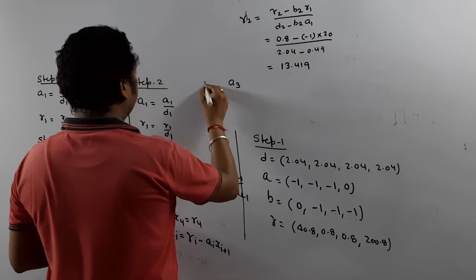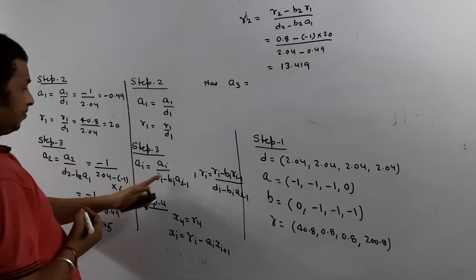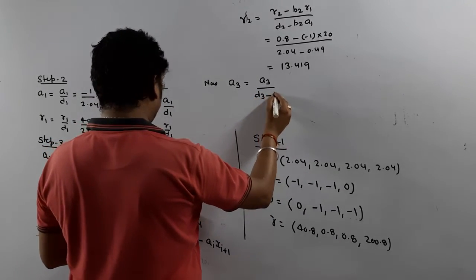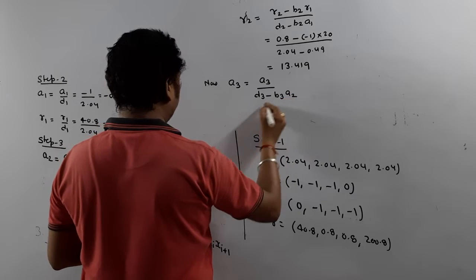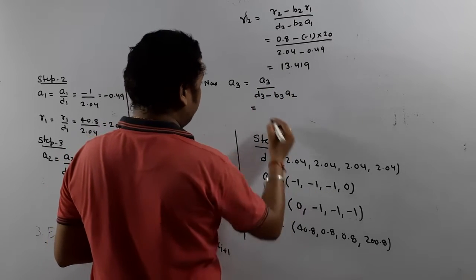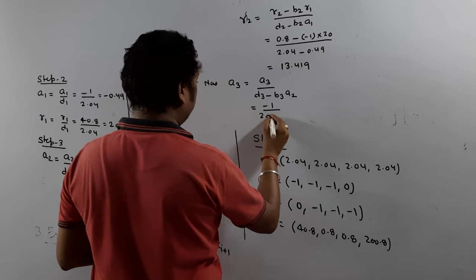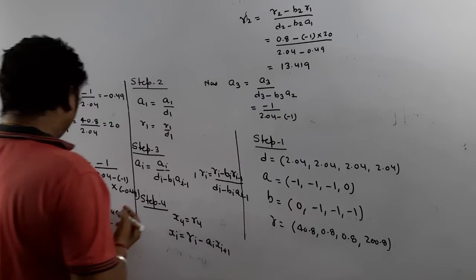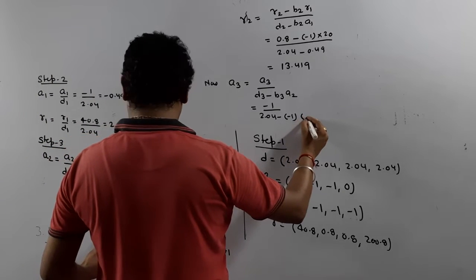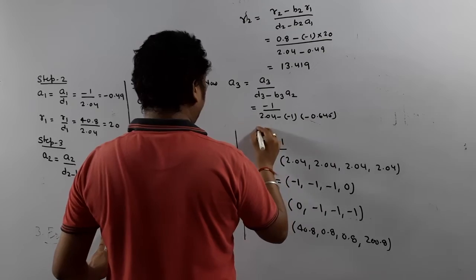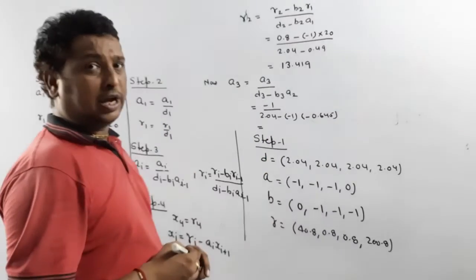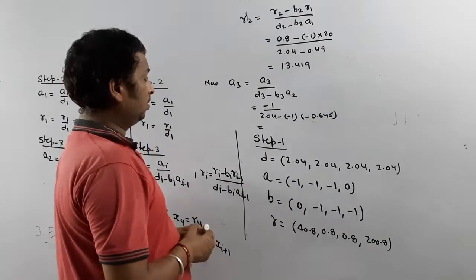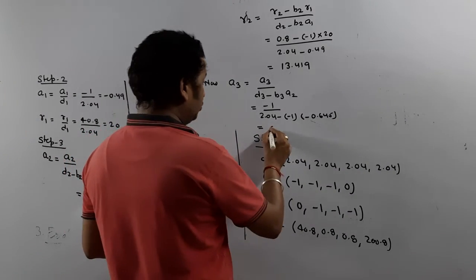Now calculate A3. Putting i = 3: A3 = A3 / (D3 − B3 × A2). A3 = −1, D3 = 2.04 (actually B3 = −1 is the lower diagonal), and we use improved A2 = −0.645. So A3 = −1 / (2.04 − (−1)(−0.645)). When you simplify, A3 = −0.716.